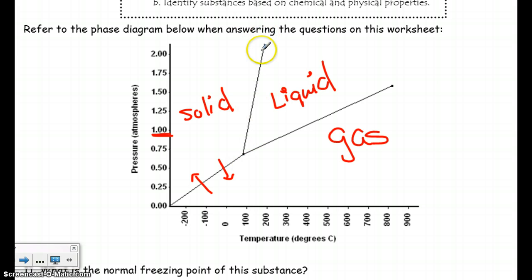This line right here between solid and liquid represents the two phase changes between solid and liquid. So from solid to liquid, that's melting, and then from liquid to solid, that is freezing.